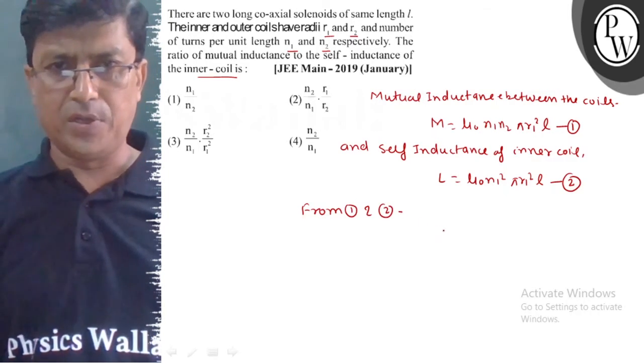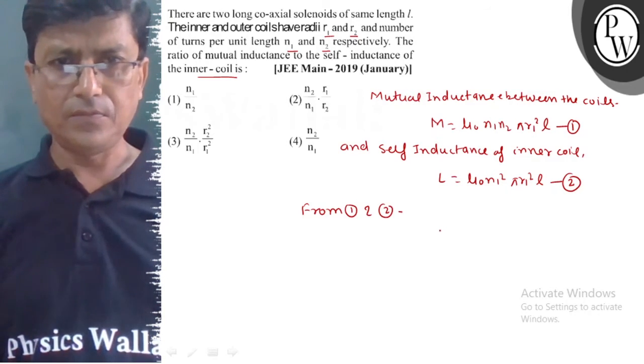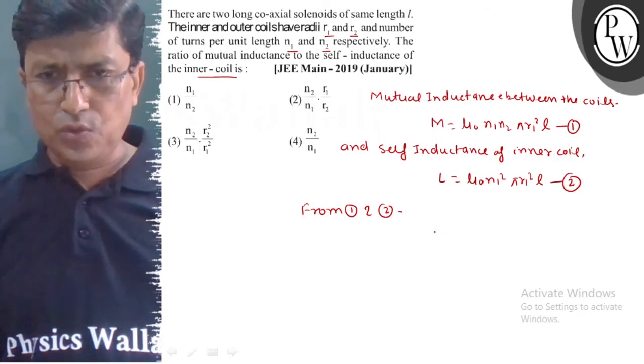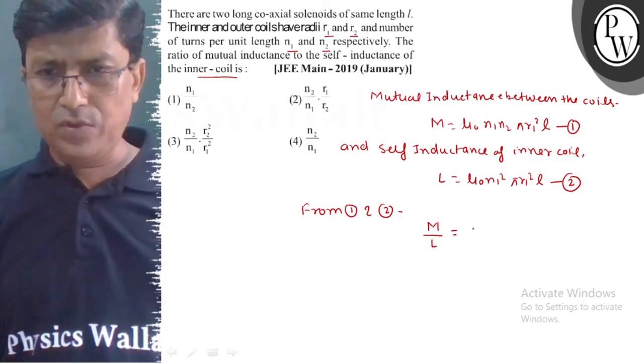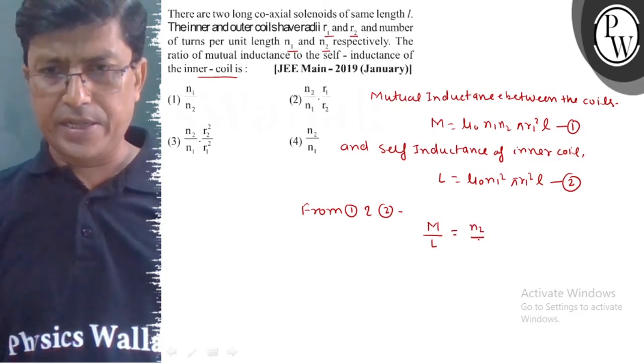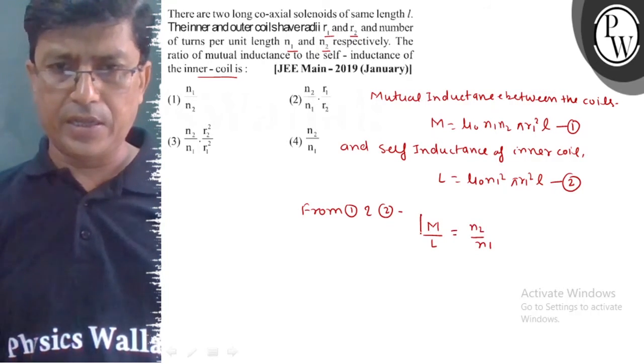If we divide here equation 1 by equation 2, then M upon L value will be equal to N2 upon N1.